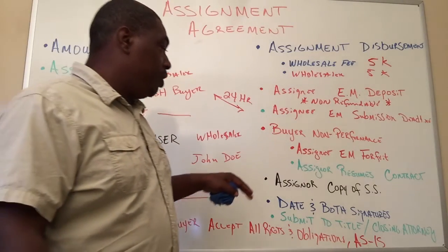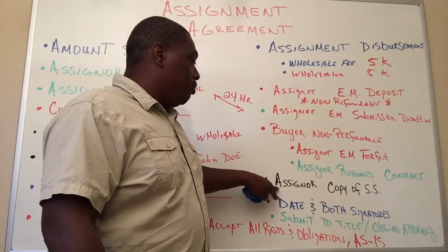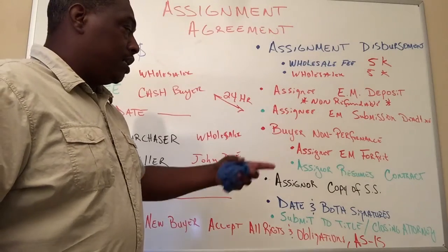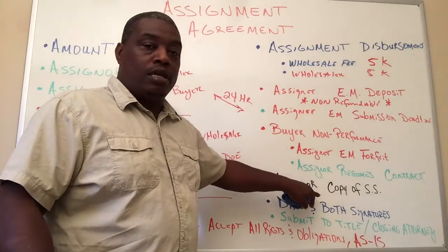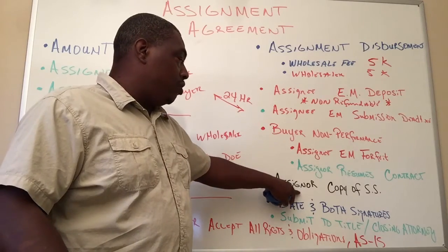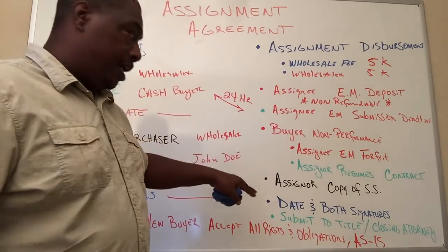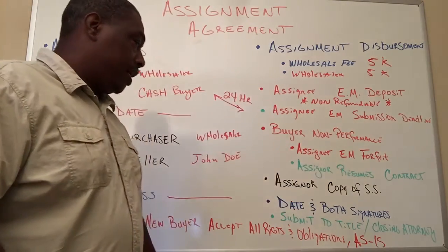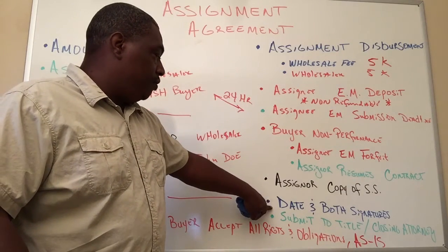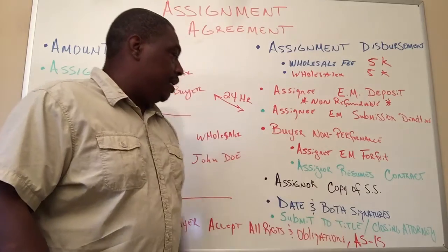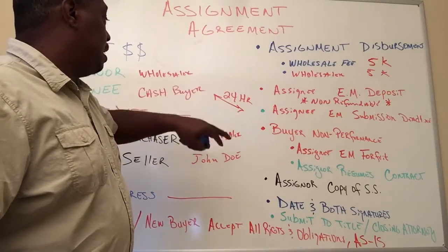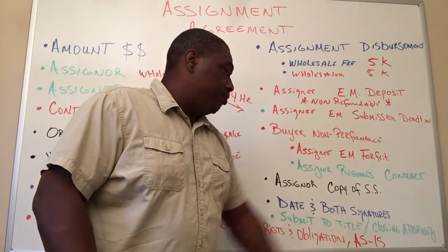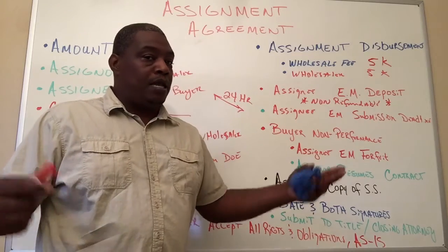Also, the assignor receives a copy of the settlement statement from the title company or closing attorney. This way you can track your paperwork and keep up with the properties that closed, and for tax time you can show documentation of that contract and deal. Both parties date and sign the assignment agreement, and then you submit that to the title company or closing attorney. That's basically it — a one-page assignment agreement, very simple.